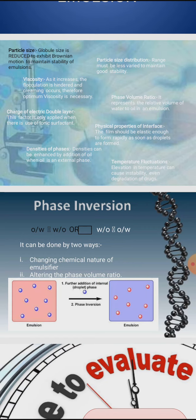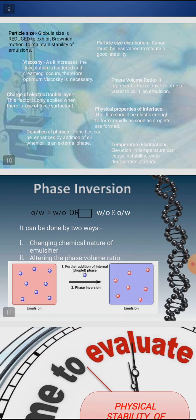The third factor is viscosity. Viscosity is another important factor to improve the physical stability of an emulsion. As viscosity increases, flocculation of globules is reduced because the mobility of globules is restricted. However, simultaneously, the Brownian movement of globules will also be hindered, leading to creaming. Due to this antagonistic effect, an optimum viscosity is desirable for good stability.